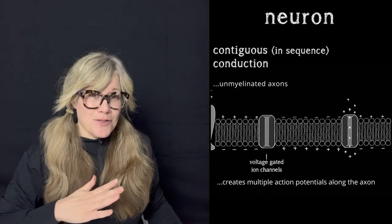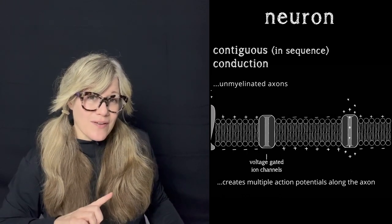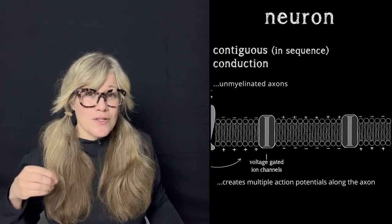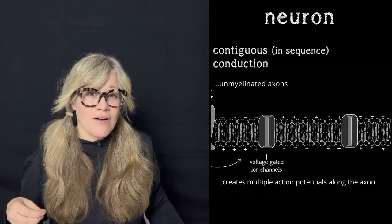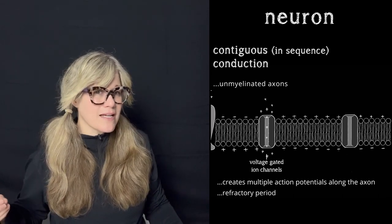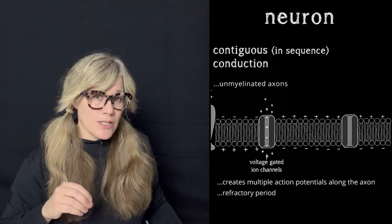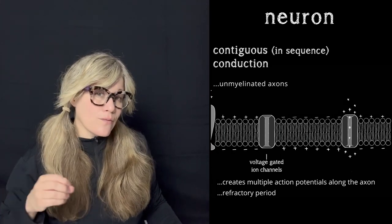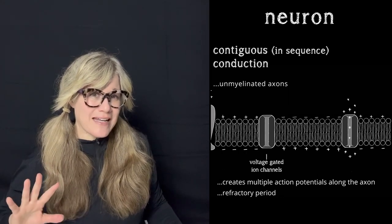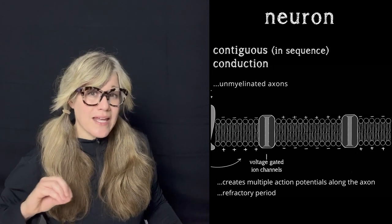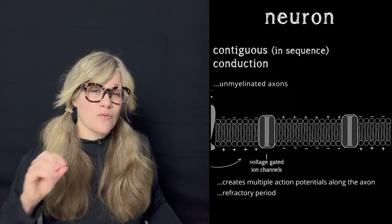What keeps the action potential going in one direction? Well, once the next section of membrane becomes activated, the previous section returns to its resting state, and when it returns to its resting state, it enters something called a refractory period. This means that when the next action potential is generated and depolarization of the membrane happens, the voltage-gated sodium ion channels in the previously active section of the membrane remain closed, so they cannot be triggered to open again until the whole cell returns to resting state and resets them. So both contiguous and saltatory conduction can only happen in one direction.